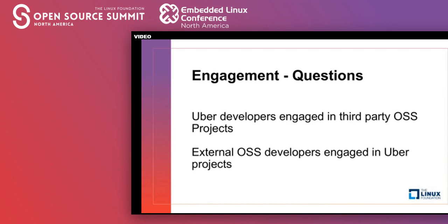Why is this important? From a strategic open source perspective, if you are a large organization using and producing open source, that open source is a key part of your technological stack. You need to understand who is there, how you can help that project advance — because this is critical infrastructure. You need to understand what's going on, how you can help it advance, and try to align those project expectations to your own needs.